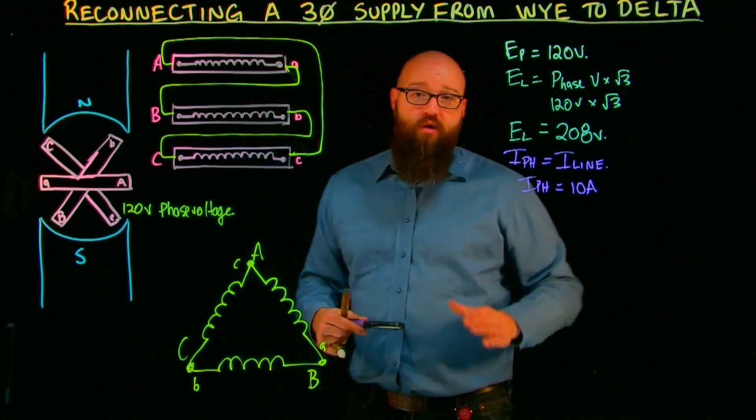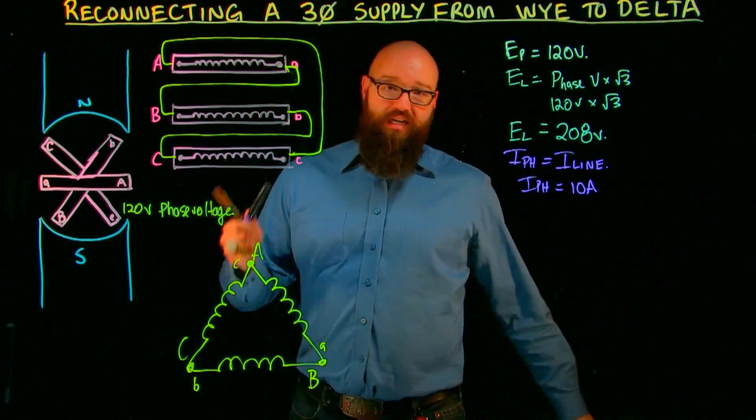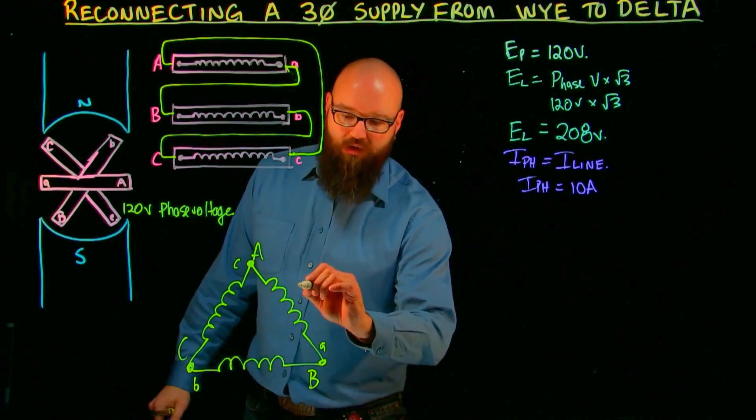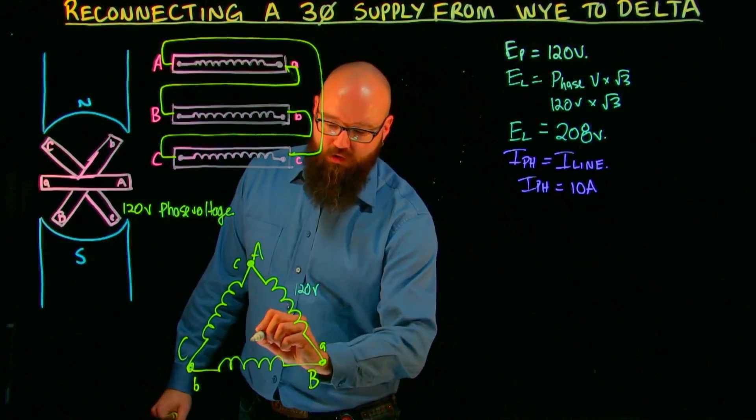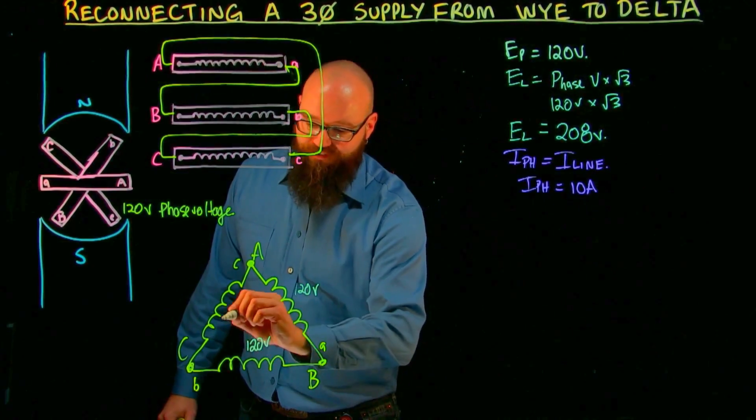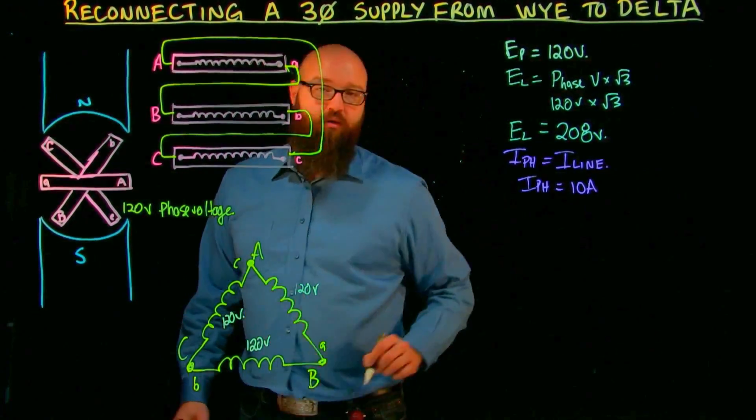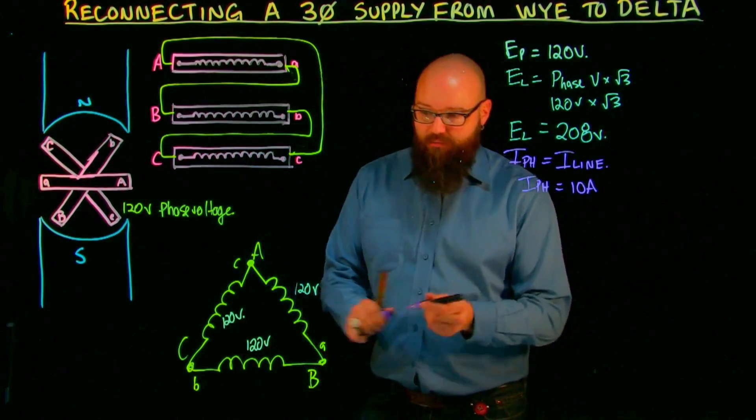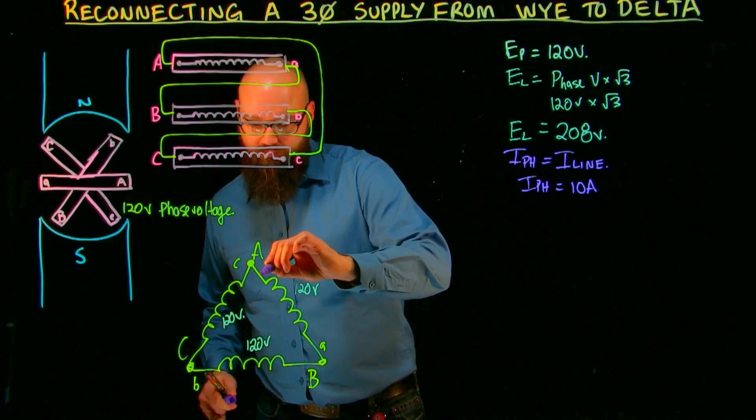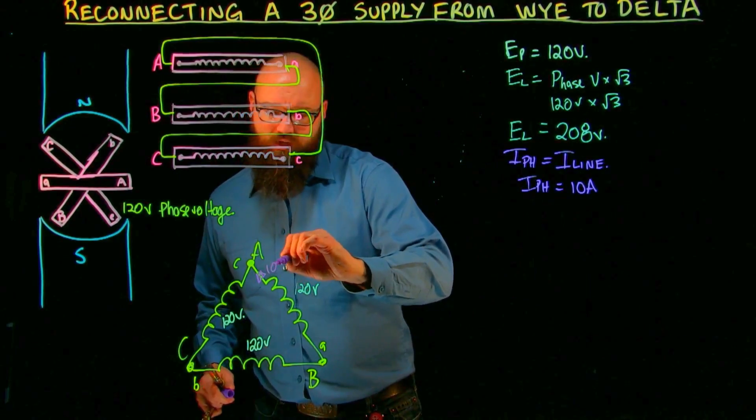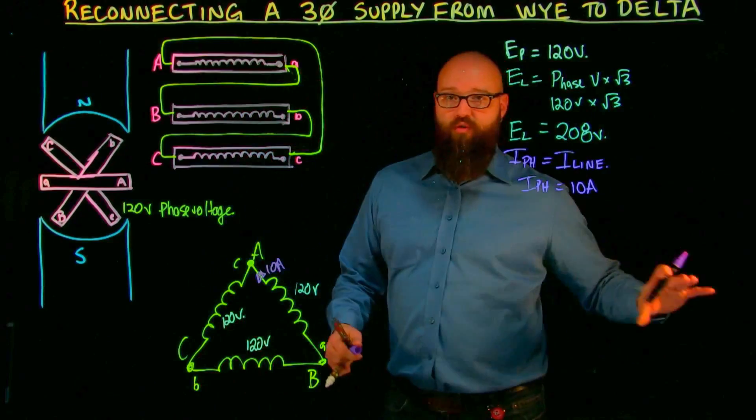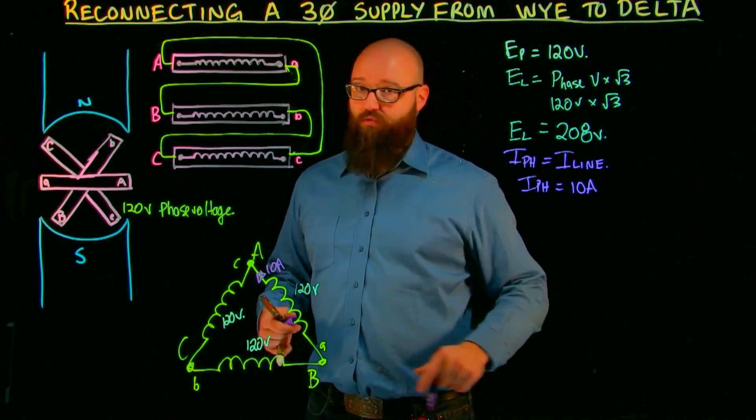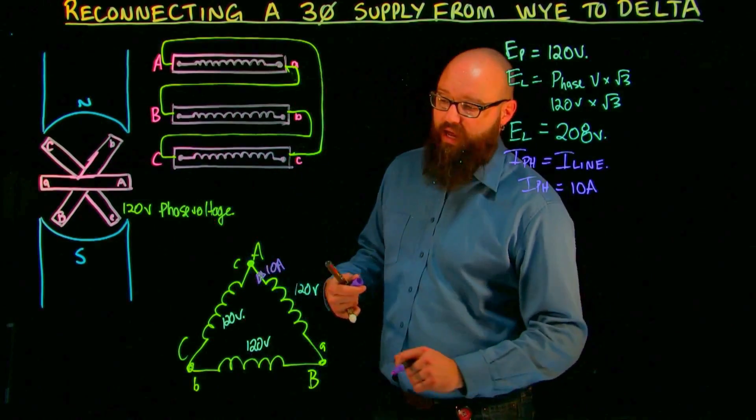So as mentioned before, one of the things we need to remember is that we are still generating the exact same amount of phase voltage that we were before. We still have 120 volts of phase voltage. And because my voltage hasn't changed, Ohm's law tells me that I'm still going to see 10 amps. If that's what my load is drawing is 10 amps, I would still see 10 amps in my phase. Same voltage, same impedance, same current.